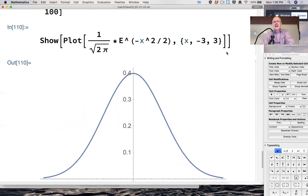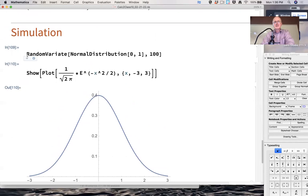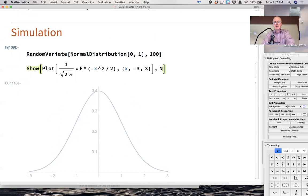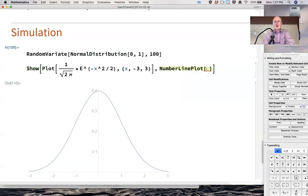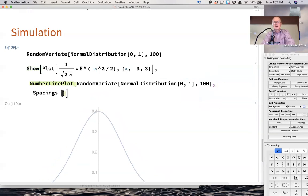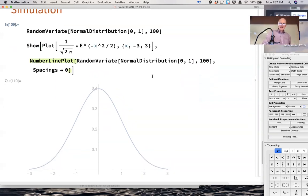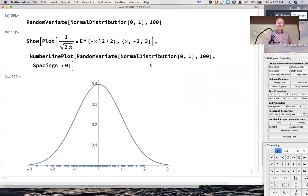I'm also going to plot the data generated by this code here, by also including something called a number line plot. Don't worry about the details of this code. So what I'm trying to put in the picture is the data, essentially, that random variate generates. There it is. And if I re-enter it again, it'll produce new data.